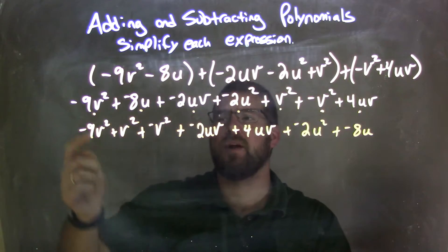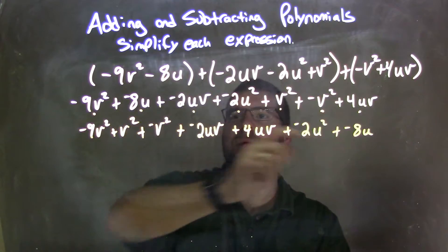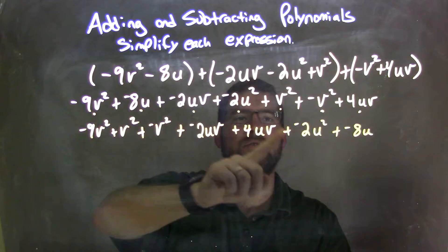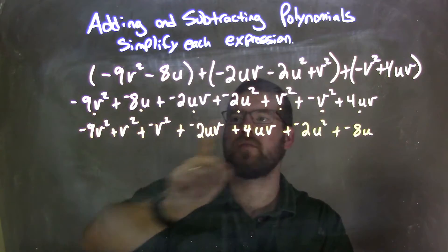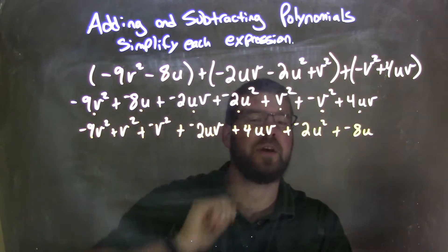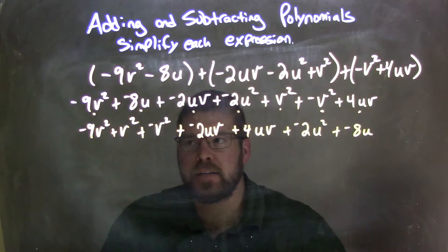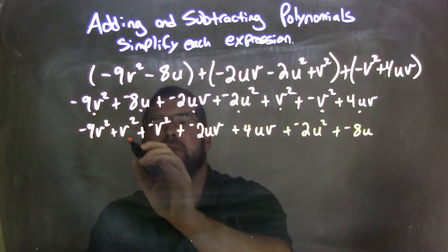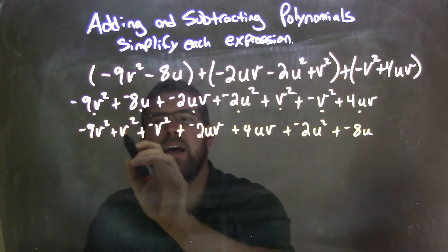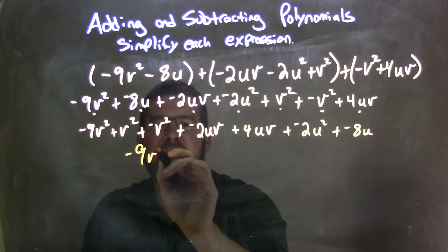So let's double check — we brought everything down: negative 9v squared, negative 8u, negative 2uv, negative 2u squared, v squared, negative v squared, and positive 4uv. Now let's combine the like terms. Negative 9v squared plus v squared plus negative v squared — these two cancel each other out, so we're left with just negative 9v squared.